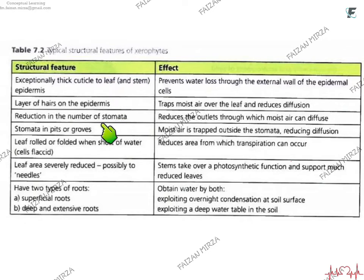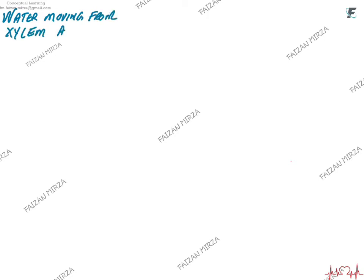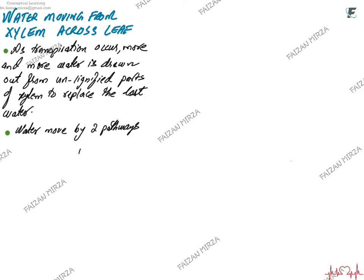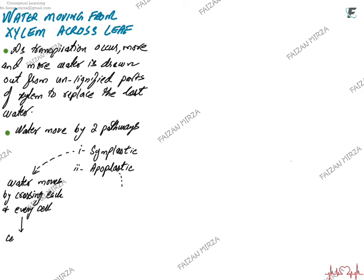Now that we have discussed transpiration, let's move on to how water moves from xylem across the leaf. As transpiration occurs and water is lost, more water is drawn out of the xylem through the unlignified parts called pits — which were initially plasmodesmata. Water goes out from xylem into the leaf cells and spreads by two pathways: the symplastic pathway, where water moves by crossing each part of the cell including the cell membrane, vacuole, and cytoplasm via osmosis and diffusion through plasmodesmata; or the apoplastic pathway.